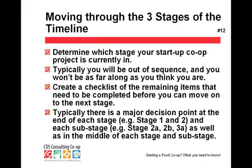One last point about timelines: try to determine which stage of the three stages you are currently in. Typically I find that co-ops are doing things out of sequence, and while that might be okay for a while, it will eventually catch up with you if you don't cover all the things needed in each stage. If you're in stage one and have jumped ahead to some stage two activities — like Bonnie's example — create a checklist of the remaining stage one items that need to be completed before you can truly move from stage one to stage two.